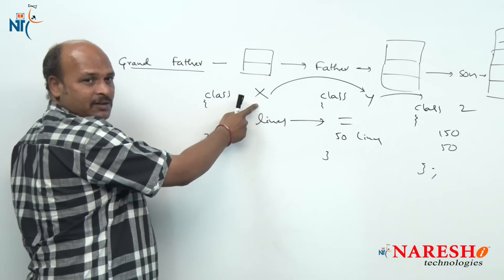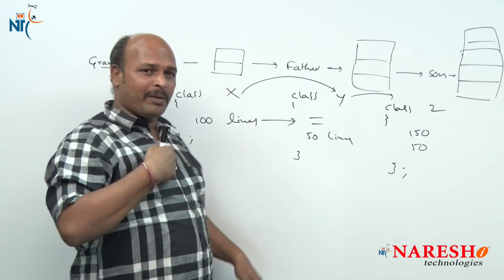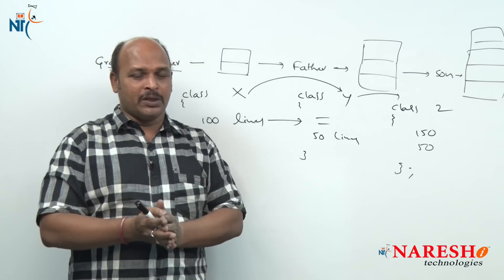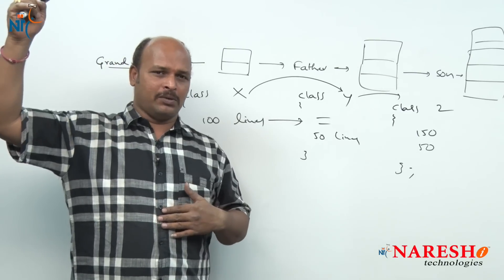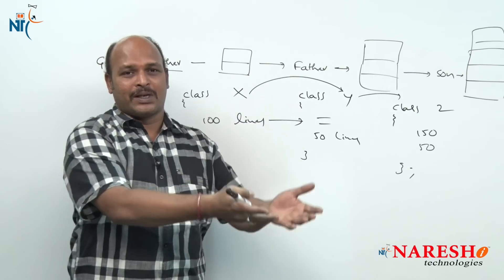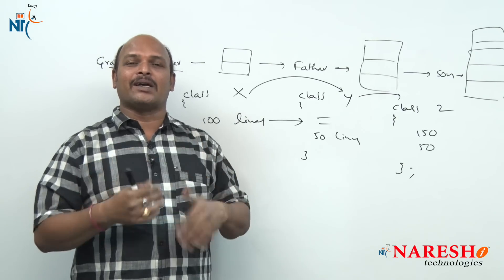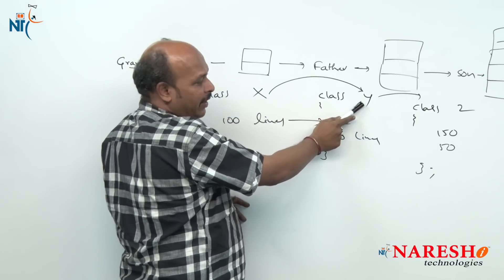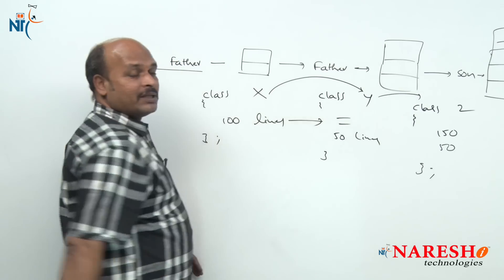Class Y is the main derived class but it also has a derived class of its own. Just like a person who was once a child but now has a child of their own — to their father they are the son, so the father is the base and they are derived. But since they now have a son, that son is derived from them, making them the base. That is why class Y is called the intermediate base class.